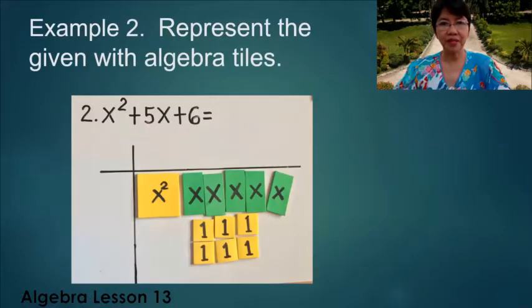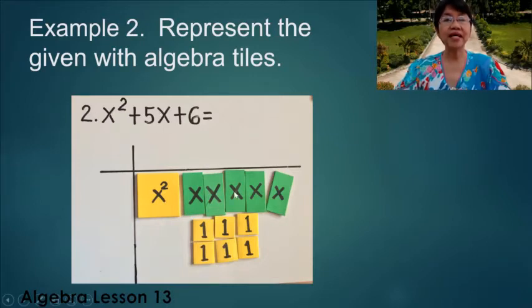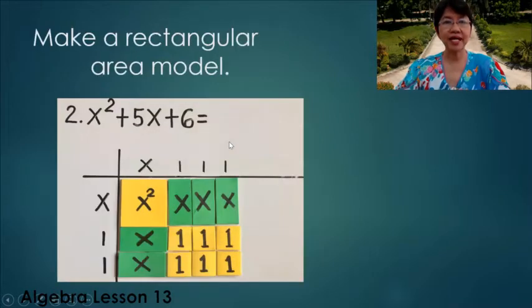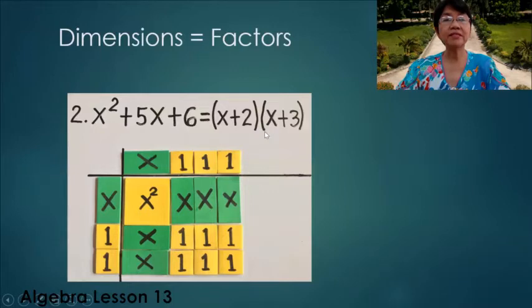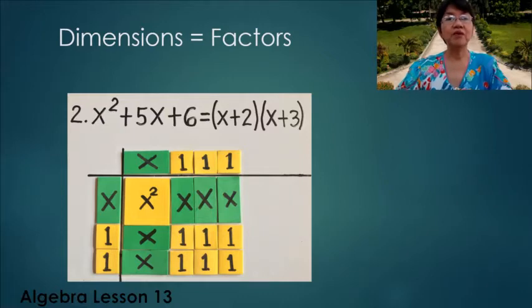Example 2: Represent the given with algebra tiles. We have x², 5 x's, and 6 unit tiles. Then make a rectangular area model. We have x + 2 and x + 3 for our dimensions, and these dimensions become the factors of our polynomial.